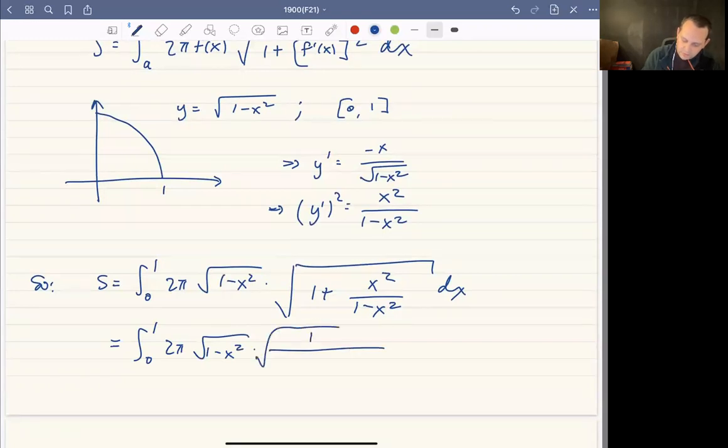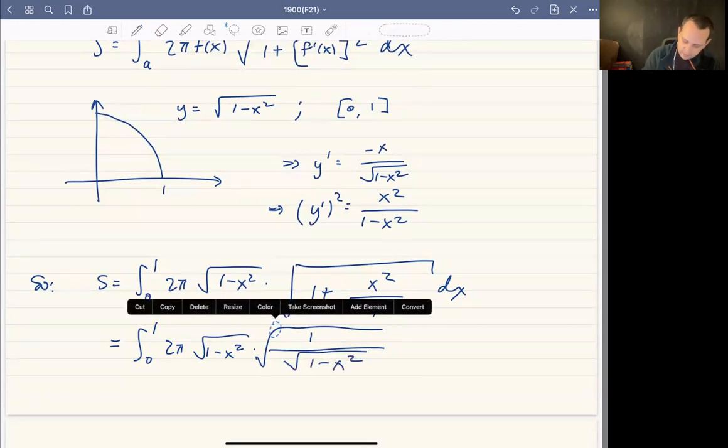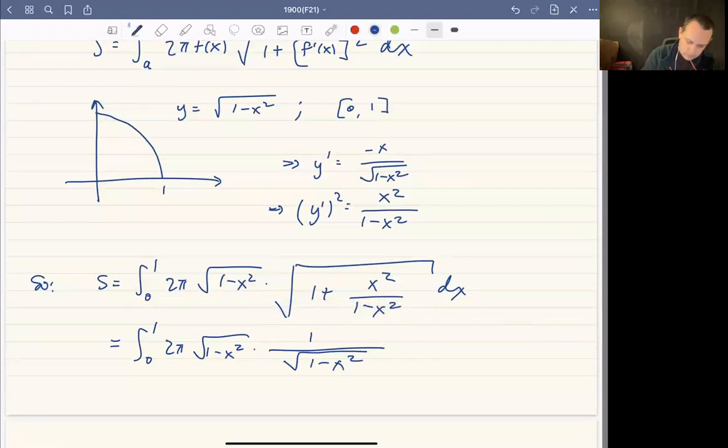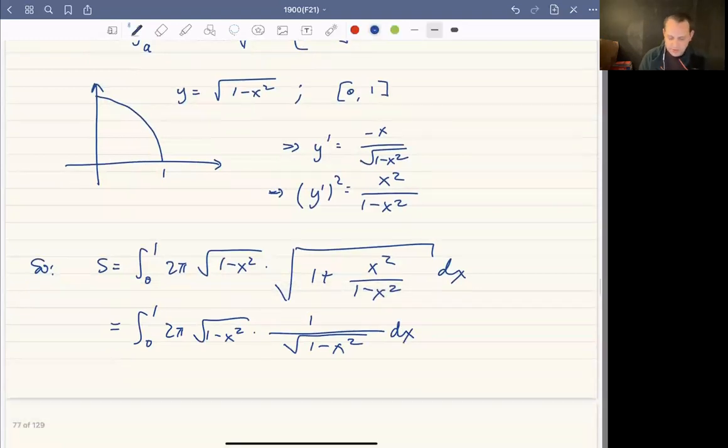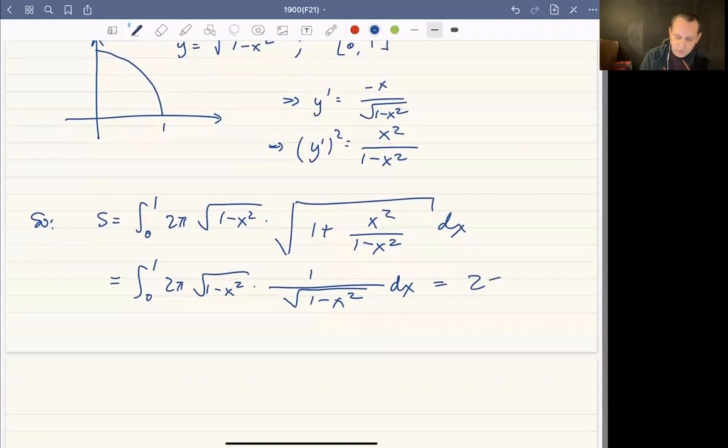one over the square root of one minus x squared. I have way too many square roots here. And the square roots happen to cancel, you end up with 2π.